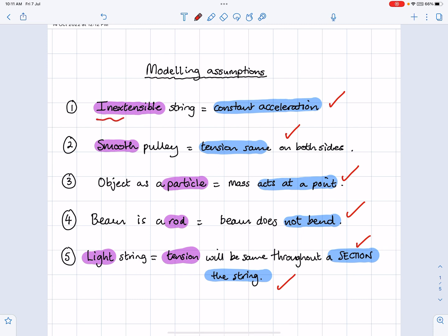If there's a smooth pulley, then you're allowed to say that the tension is the same on both sides. Considering an object as a particle means that the mass will just act at a single point there. If a beam is modeled as being a rod, then it means it doesn't bend. And if a light string, that means that tension is going to be the same throughout a section of the string, is the way that I would put it to make sure I absolutely get my marks.